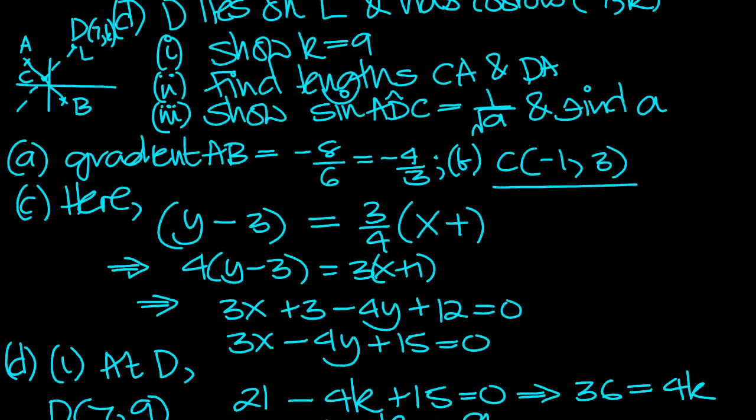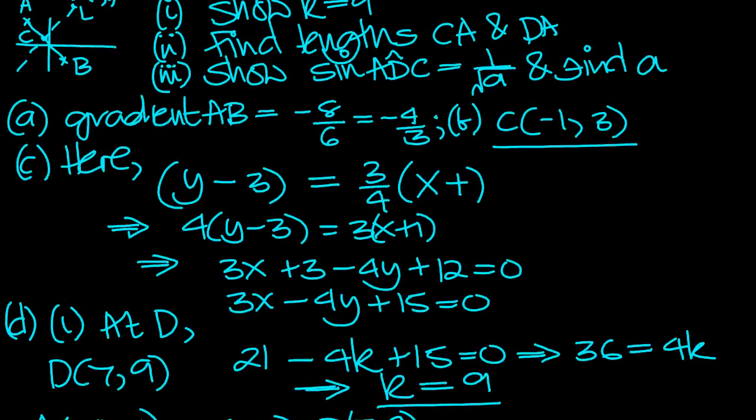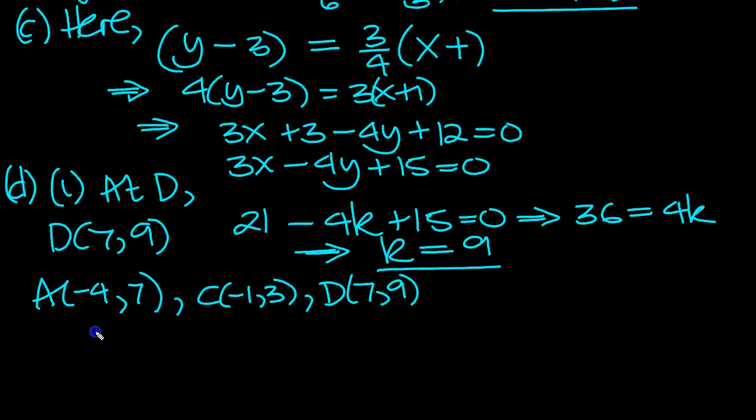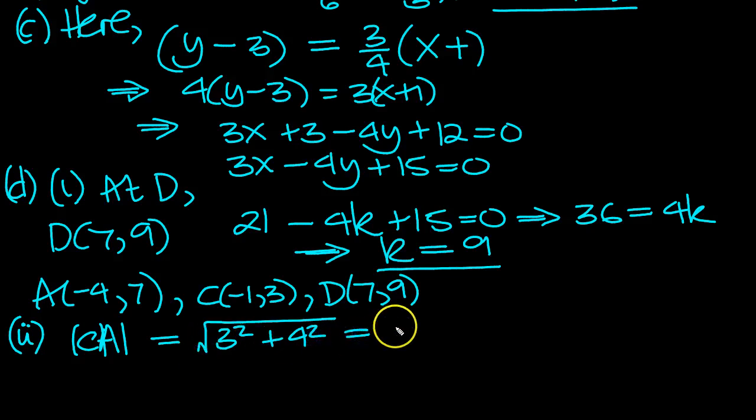And we need to find the lengths CA and DA. So CA, the length here, |CA| is equal to: the increase in x is -4 to -1 is a distance of 3 units, so that's 3². The difference between 7 and 3 is 4, so that would be 4² on the triangle using Pythagoras. And we've got a 3, 4, 5 triangle, so it's 5.